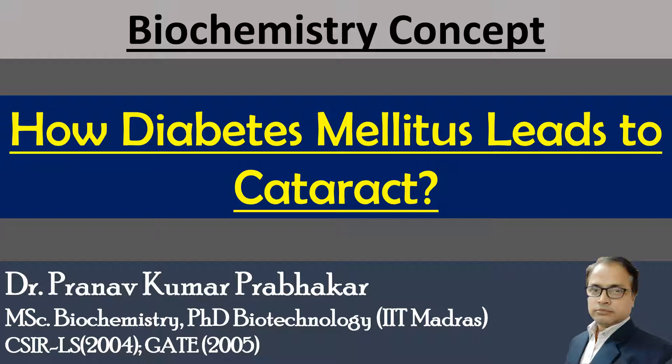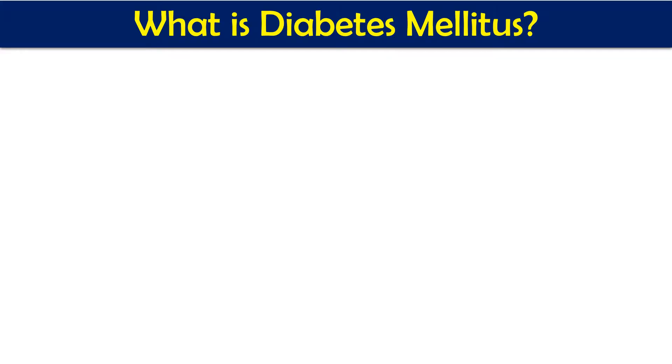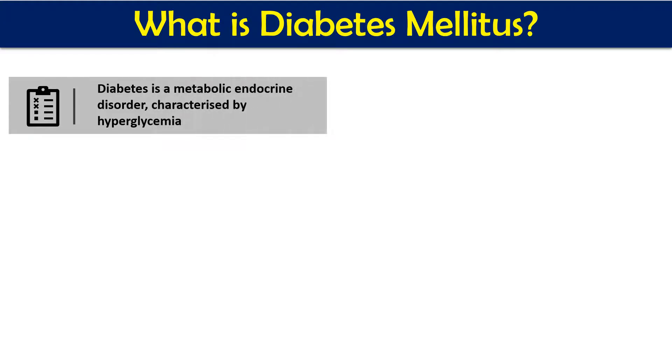Diabetes mellitus is a metabolic endocrine disorder which ultimately leads to many different disorders and many organs are going to be affected. One of the organs which is going to be affected is the eye, and that condition is called retinopathy. The specific disease we are discussing is cataract. Diabetes mellitus is characterized by hyperglycemia — the glucose level rises more than the normal value.